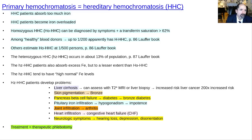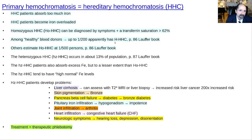Primary hemochromatosis, also called hereditary hemochromatosis (HHC), is a genetic abnormality where patients absorb too much iron. Homozygous patients — who inherited the gene from both parents — tend to have transferrin saturation over 62% and absorb about four times too much iron. According to Lauffer, it may be present in as many as one out of 200 persons; others say one out of 500. It's still a relatively common disease.